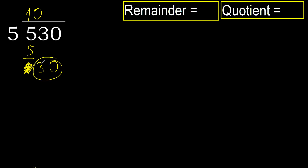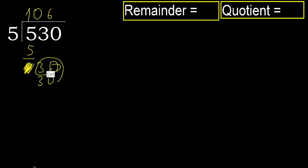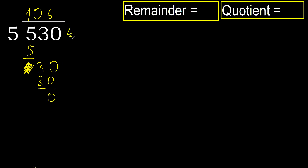Bring down the numbers: 30. 5 multiplied by 6 is 30. It is not greater. 30 minus 30 is 0. Next — that is not a number, therefore finish it.